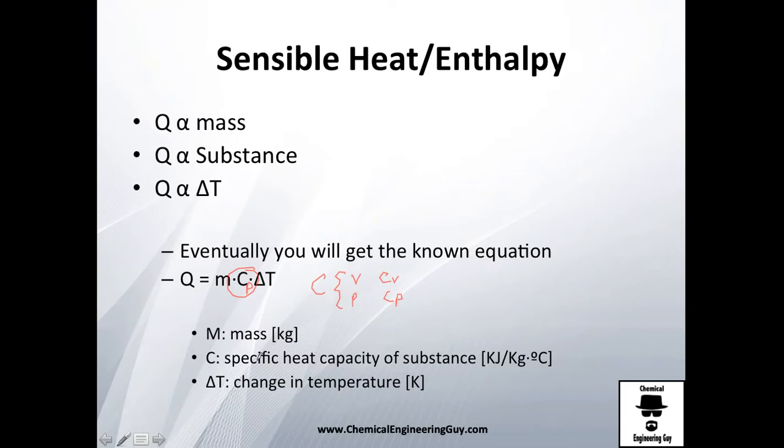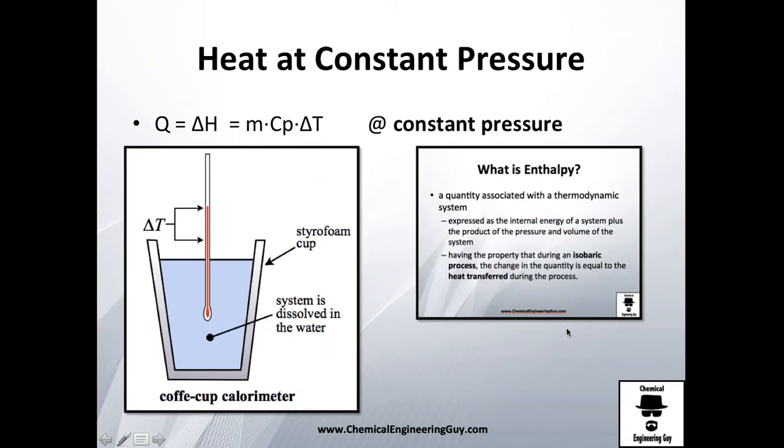Specific heat capacity of the substance is how much kilojoules that kilogram substance gets for only one Celsius change. Why one Celsius? Because we want to know how much energy is needed for one Celsius change. So let's suppose that this change right here is one Celsius, and this is one kilogram of water - I know, probably a huge bottle.